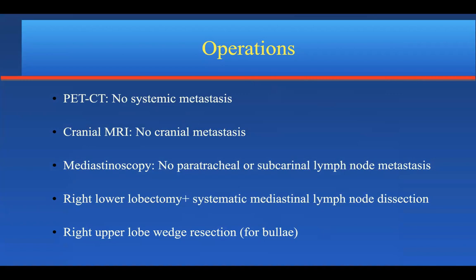PET-CT showed no systemic metastasis. We performed transthoracic needle aspiration and found the lesion was non-small cell lung cancer. Cranial MRI showed no metastasis. We performed mediastinoscopy for possible involvement of pretracheal lymph nodes, and then performed right lower lobectomy since this tumor was operable, along with systematic mediastinal lymph node dissection, which is indispensable in patients with epithelial tumors.